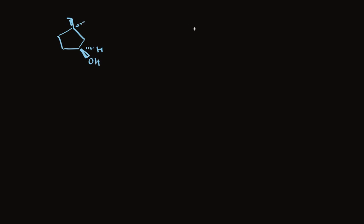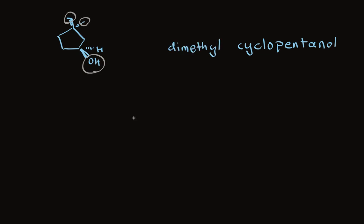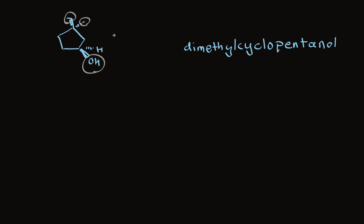Finally, let's name a cyclic alcohol. The hydroxyl group is the highest priority functional group and it's on a cyclopentane ring, so we call it cyclopentanol. There are two methyl substituents — because we have two of the same group, we say dimethyl. For a cyclic alcohol, the alcohol is always understood to be on carbon 1, so we don't need a number for it. We number the ring so that the methyl groups get the lowest possible numbers — they are at position 3,3 — giving us 3,3-dimethylcyclopentanol.